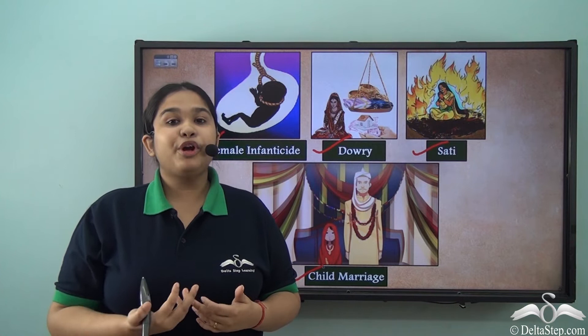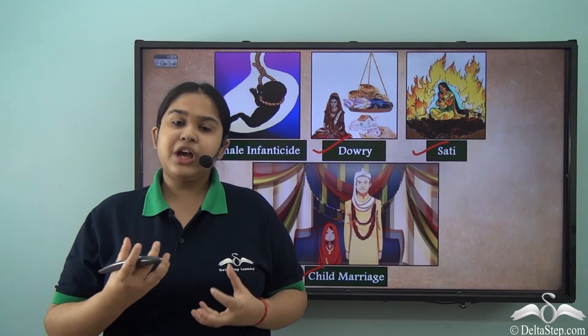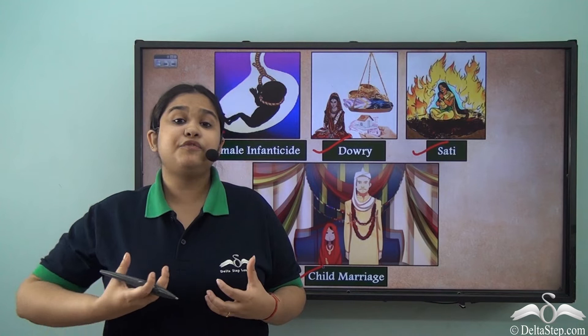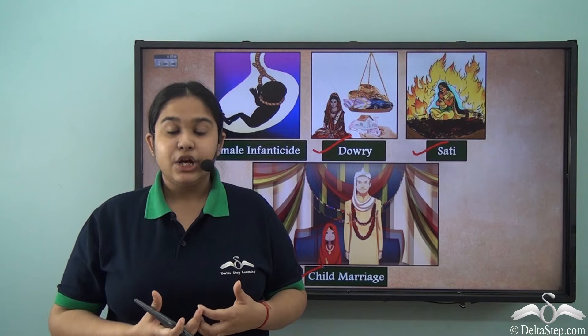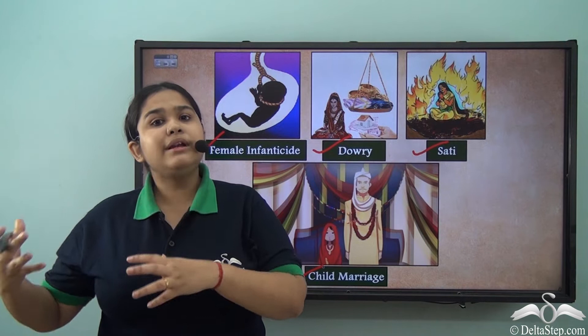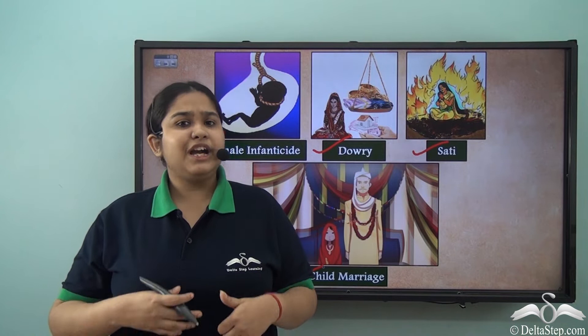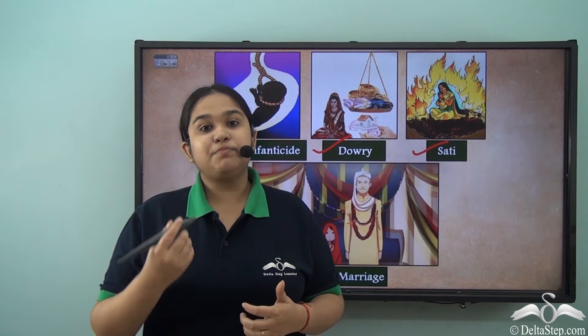Child marriage was very prevalent. It was basically when a girl of less than 8 years of age was married off to a man of 55 years or more. So little girls were being married to old men. Now, when this man of 55 or 60 years died, that is when sati was performed.